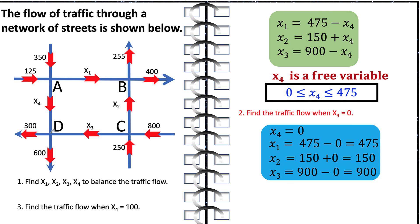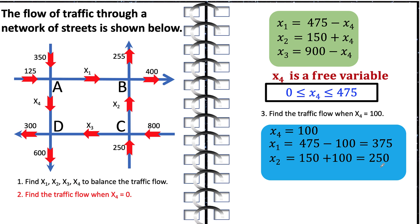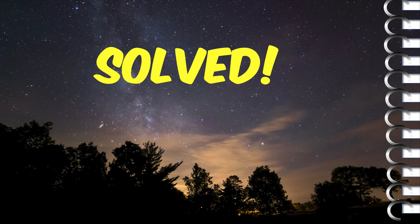For question three, if we limit the number of cars entering road AD to 100 cars per hour, then x4 equals 100. This gives x1 equals 375, x2 equals 250, and x3 equals 800. The effect is a decrease in x1 because some cars are routing to intersection D. Because more cars are coming to intersection D, some traffic from C routes to intersection B instead — increasing x2 to 250 — and the flow to intersection D from C decreases by 100 to balance the traffic. This is how we use mathematics in the real world. Thank you very much — this problem is now solved.